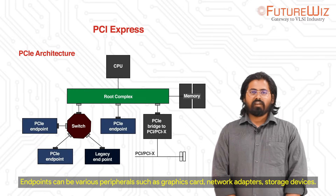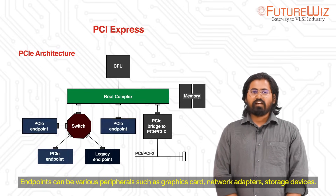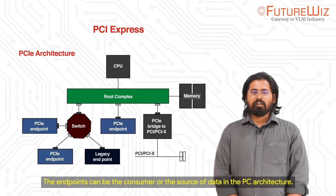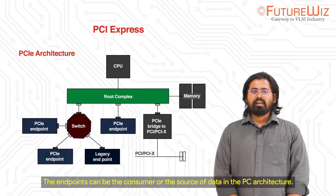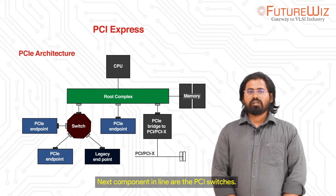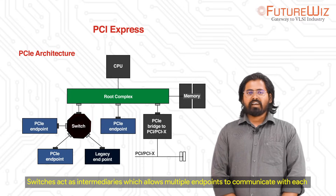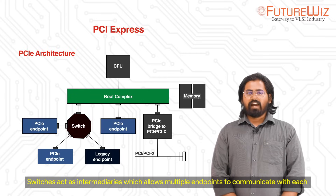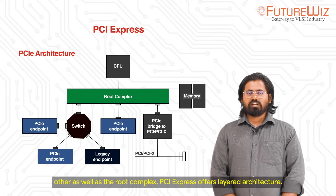Endpoints can be various peripherals such as graphics cards, network adapters, and storage devices. The endpoints can be the consumer or the source of data in the PCI architecture. The next component in line are the PCI switches. Switches act as intermediaries which allow multiple endpoints to communicate with each other as well as the root complex.